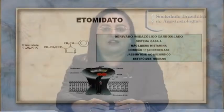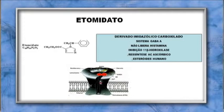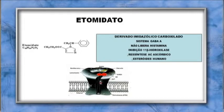O etomidato é um derivado imidazólico carboxilado que age no sistema GABA-A. Em pequenas doses, lembra o efeito dos benzodiazepínicos — intensifica a abertura do canal na presença do GABA. Em doses maiores, age semelhante ao barbitúrico. Não libera histamina, inibe a 11-beta-hidroxilase, diminuindo a síntese de cortisol e de esteroides nos seres humanos.